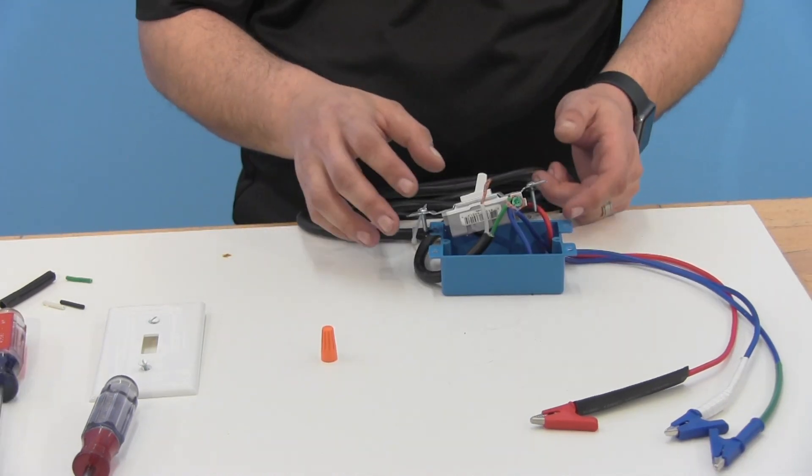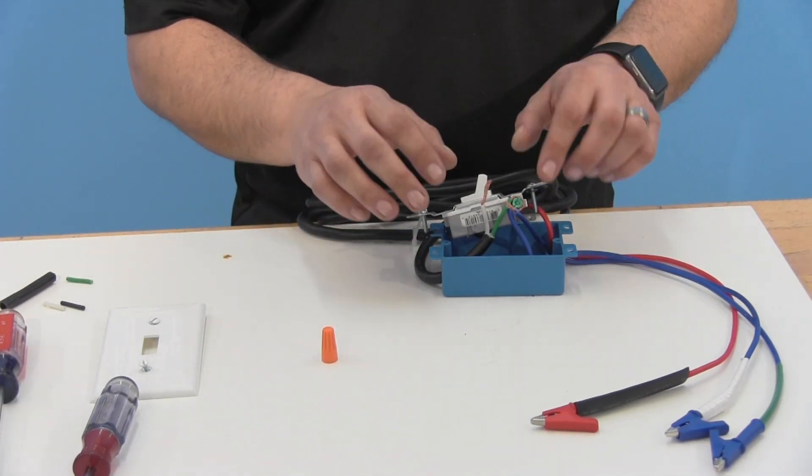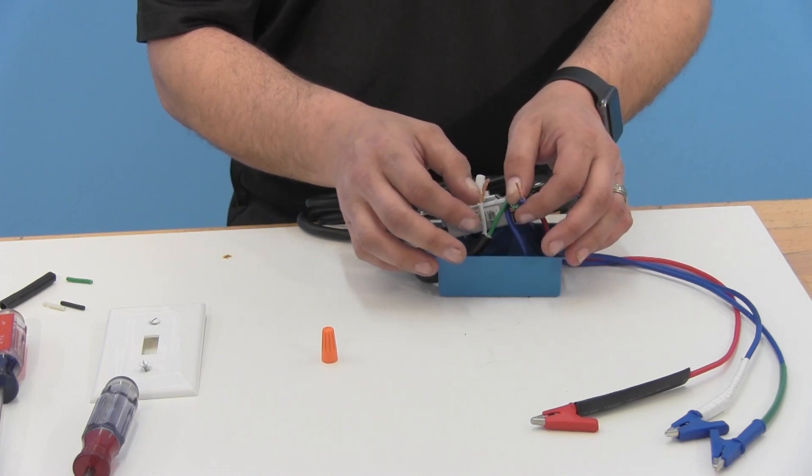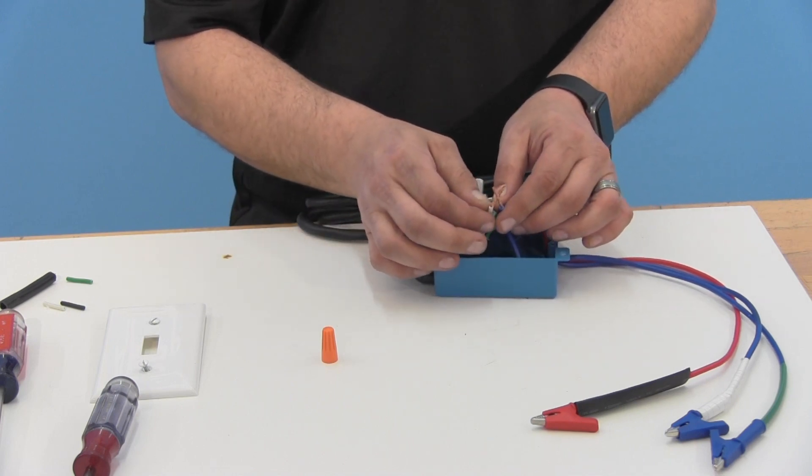Once we have everything connected here, we're going to want to go ahead and connect our neutrals and what you want to do is you want to grab your neutral wire off your alligator lead and then the white wire off your power supply.